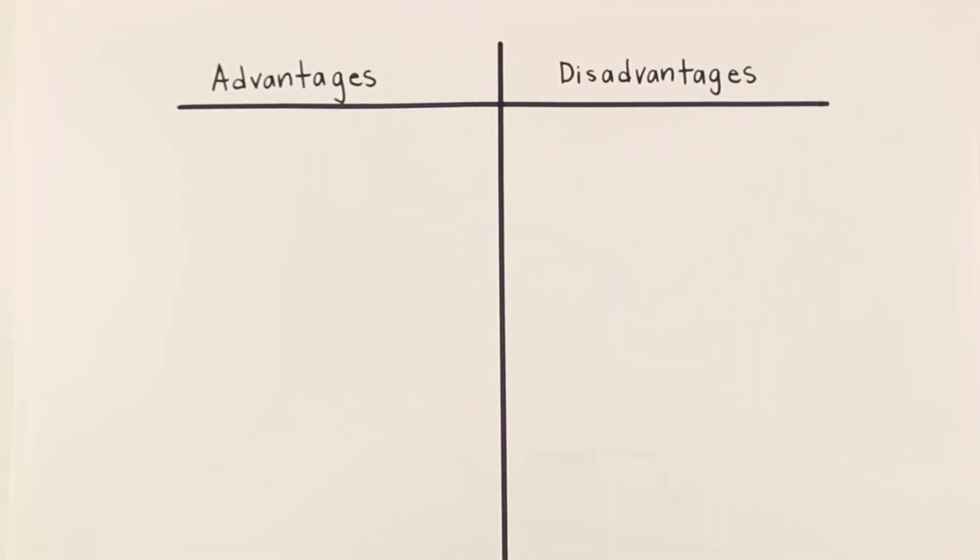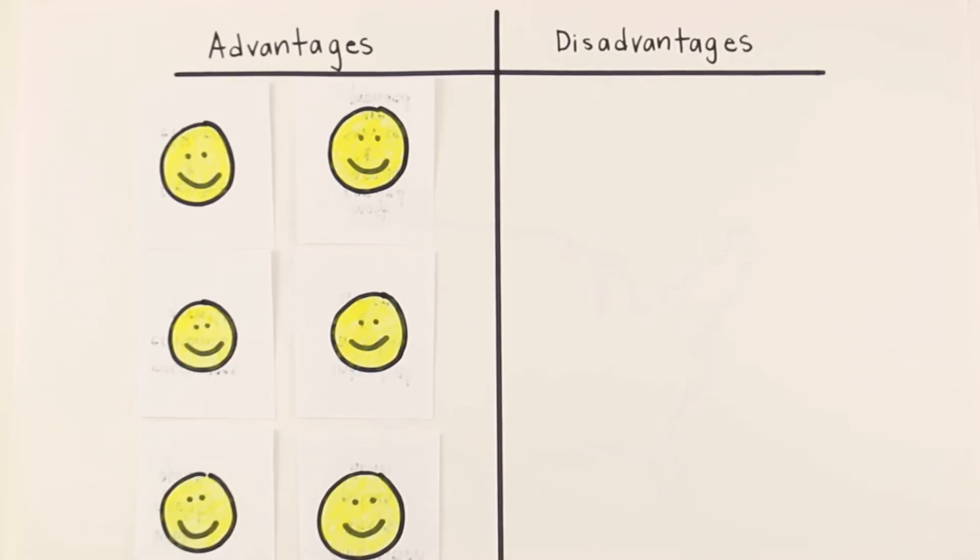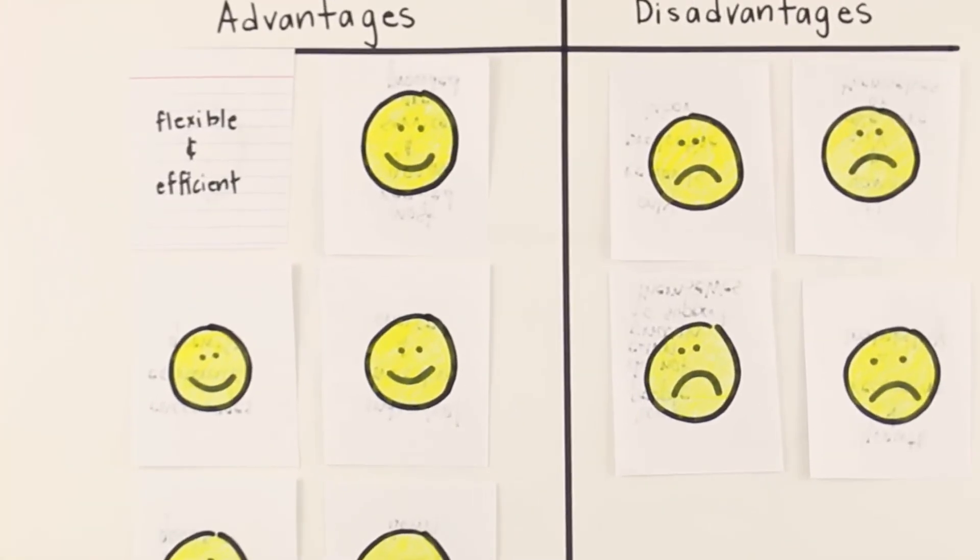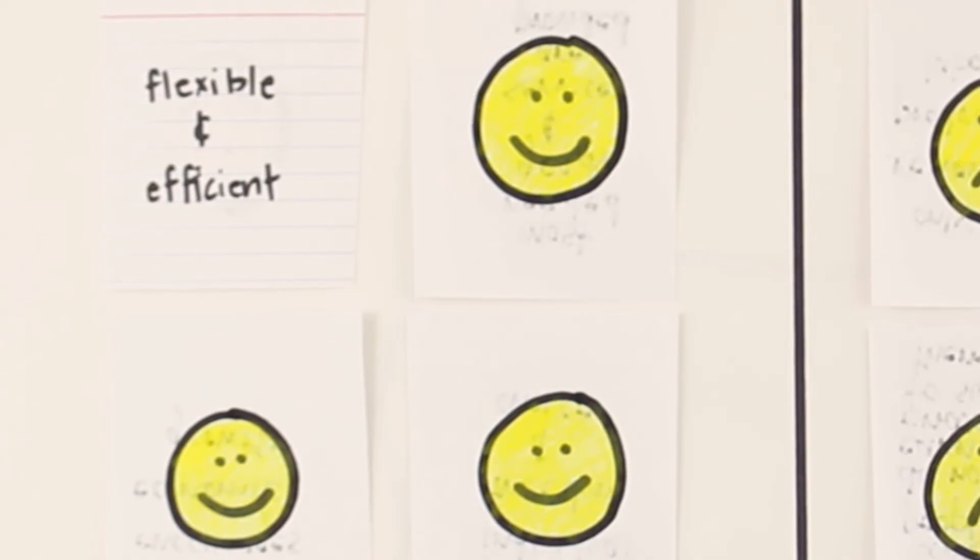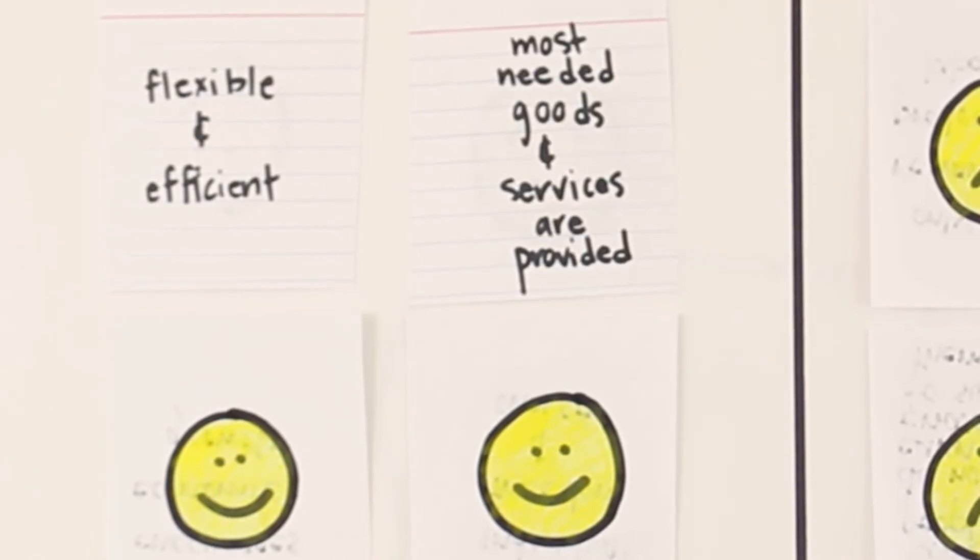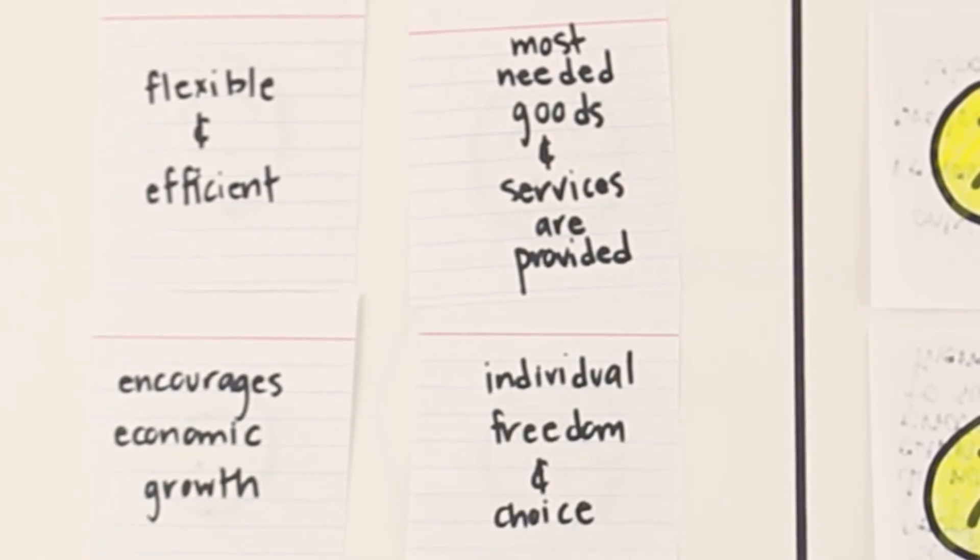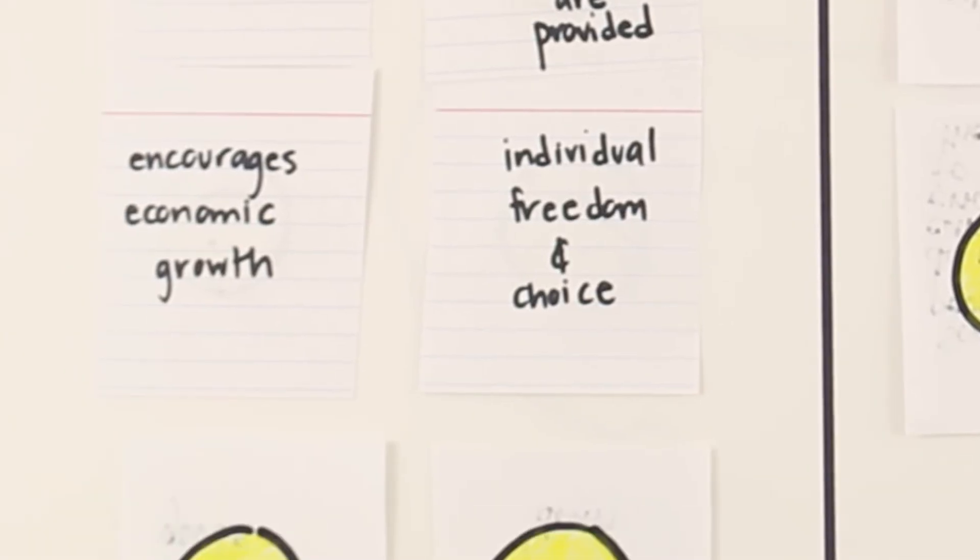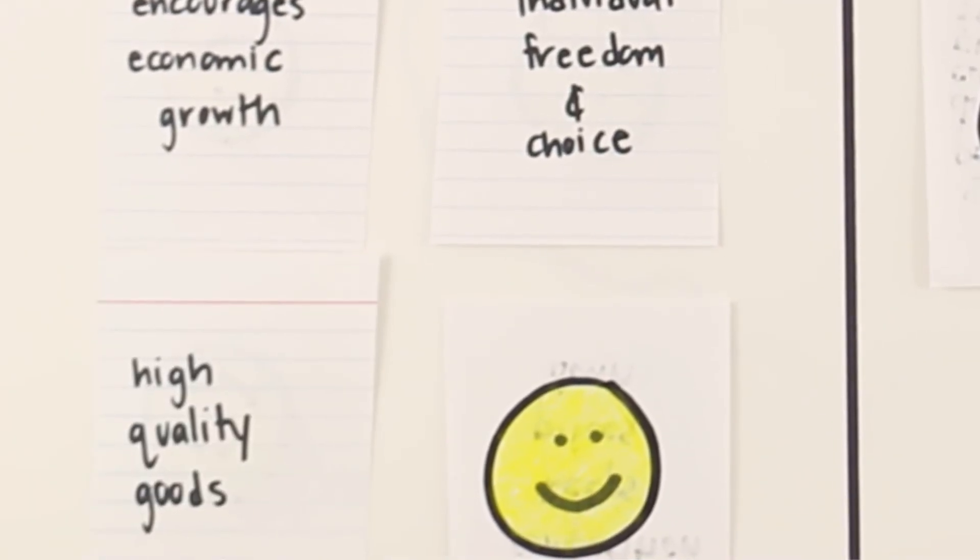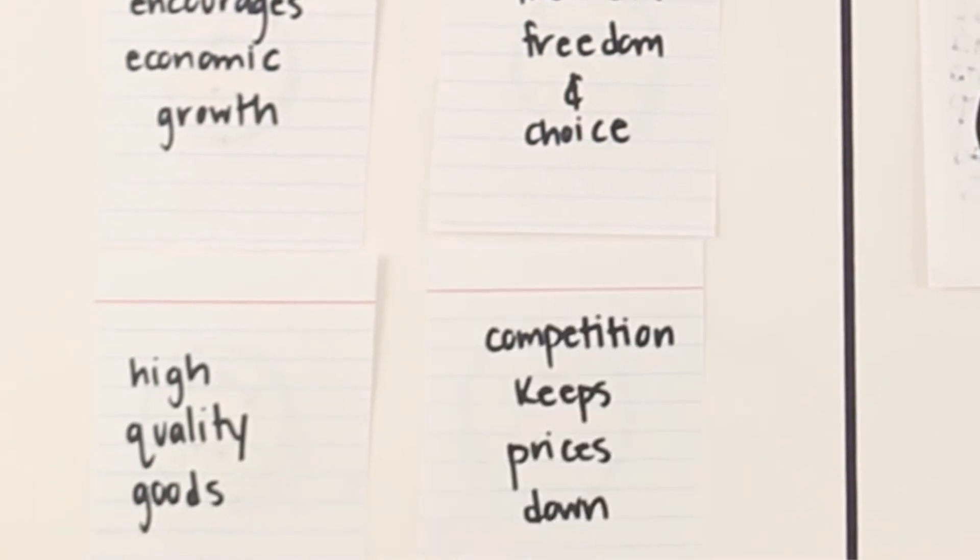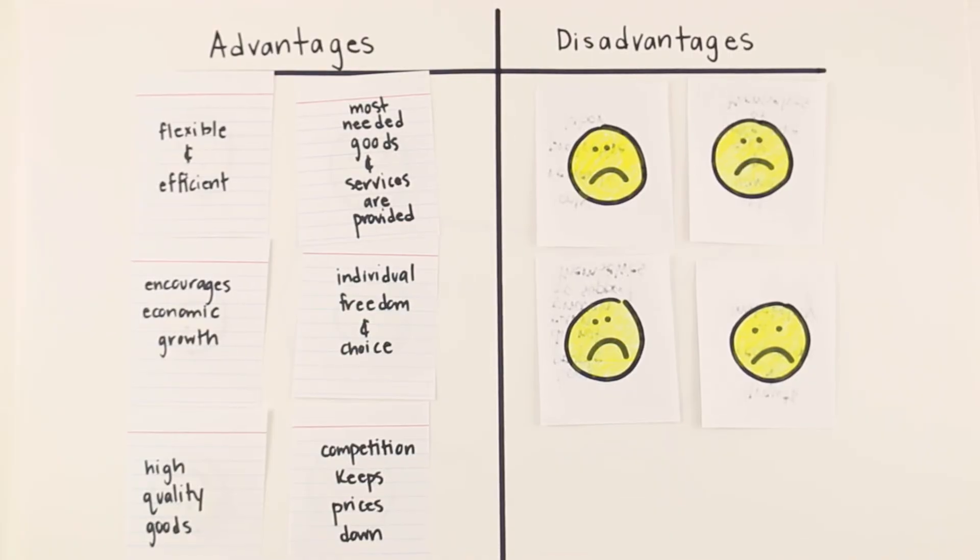Overall, market economies have advantages and disadvantages. Advantages include the system is flexible and efficient. It helps make sure the most needed goods and services are provided, and it encourages economic growth. It also allows for individual freedom and choice. In general, high-quality goods are produced, and competition tends to keep prices down.